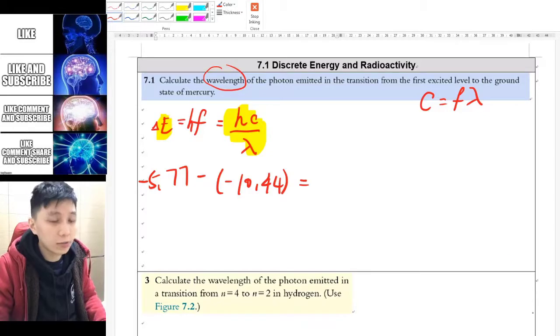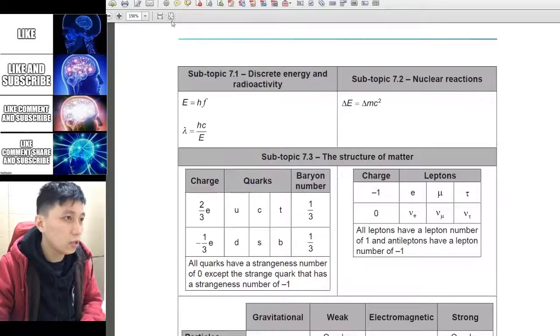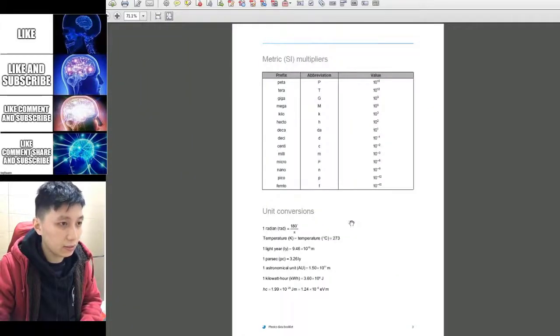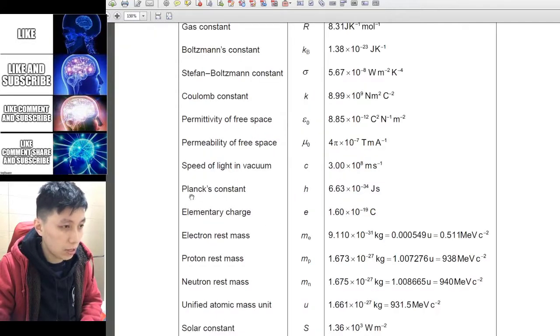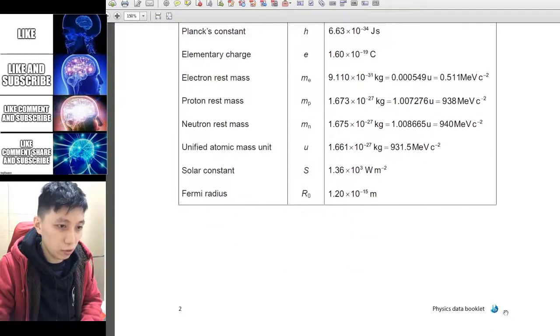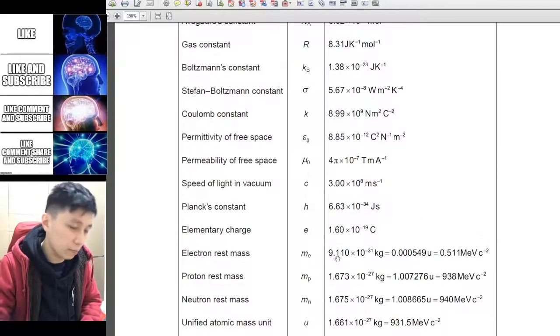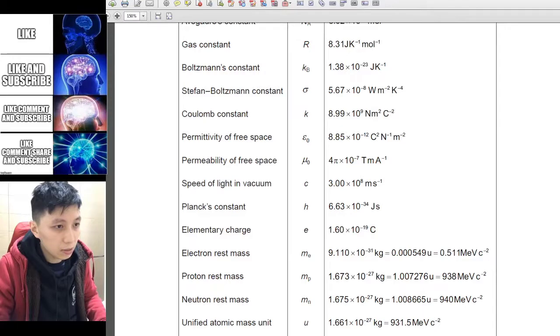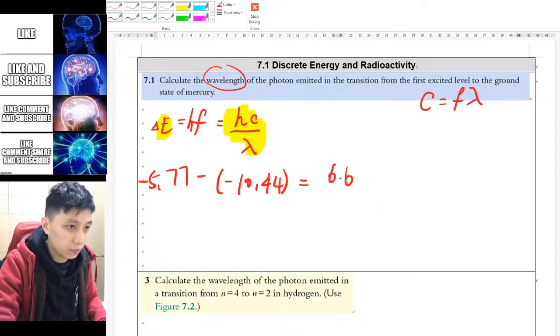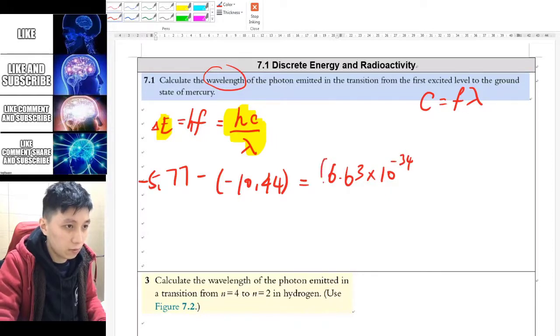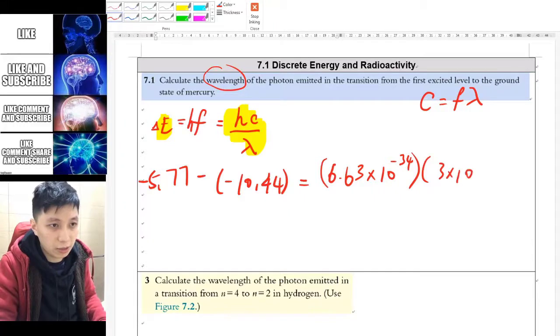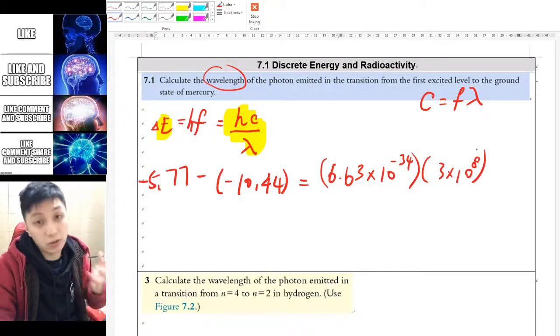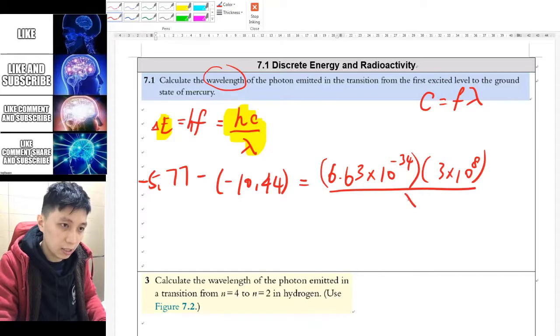As for H, H is a constant which is called Planck constant. You can also find it in the data booklet also. So let's go for it. Here, Planck constant. So you need to learn how to find it on the data booklet also. 6.63 times 10 to the power of negative 34. And C is the speed of light, so you should know 3 times 10 to the power of 8. If you don't remember, it's also in the data booklet. And lastly, the lambda.